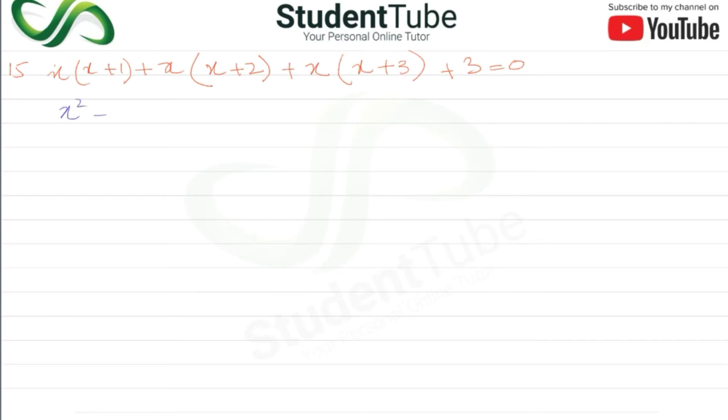x²+x, then x²+2x, then x²+3x, then +3 is equal to 0.